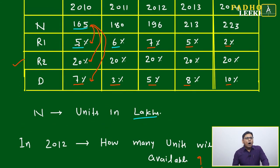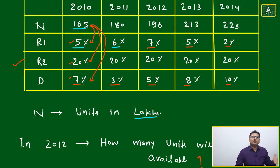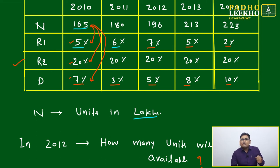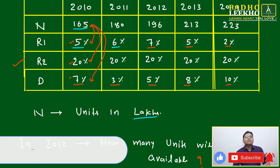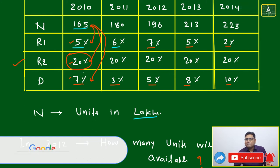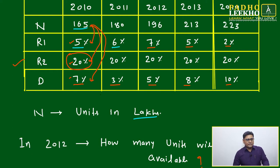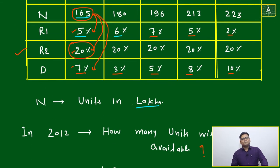For 2010's contribution in 2012: all three percentages apply — R1 = 5%, D = 7%, and R2 = 20% (since two years have passed). So 5 + 7 + 20 = 32% will be out, and 68% remains. 68% of 165 lakhs contributes from 2010. For 2011: R2 does not apply yet, so only R1 = 6% and D = 3% are deducted — 9% out, 91% of 180 lakhs remains.